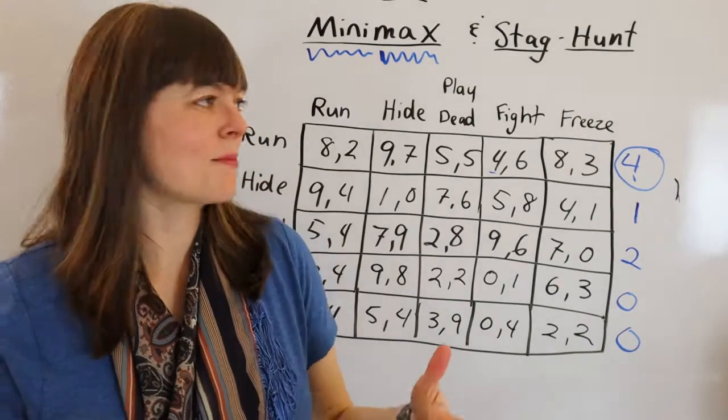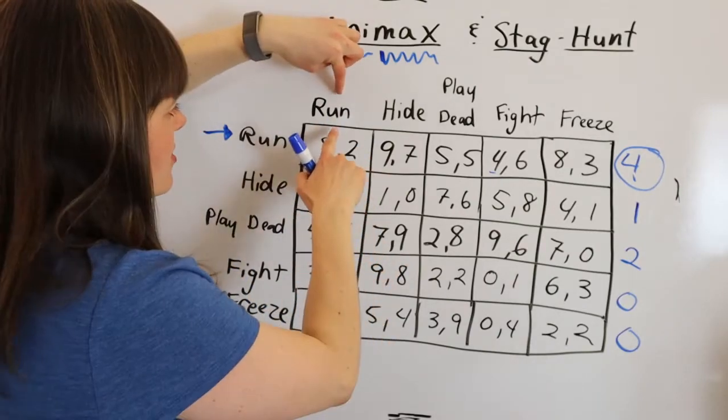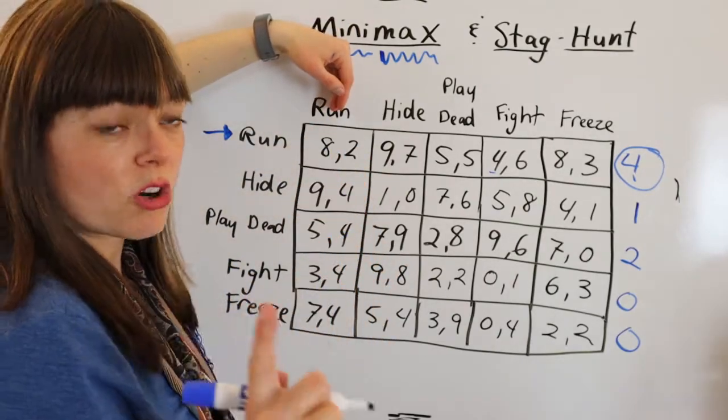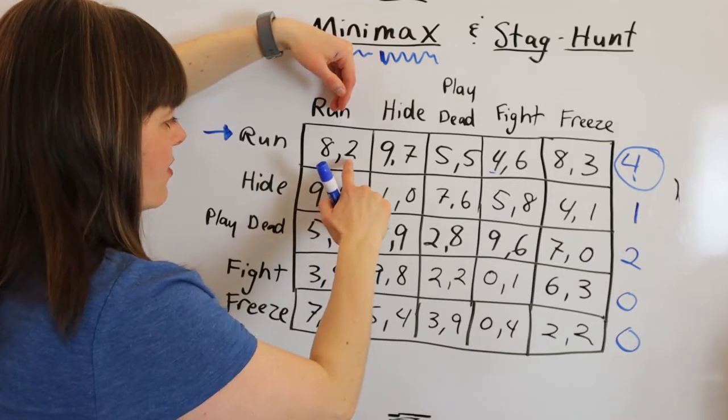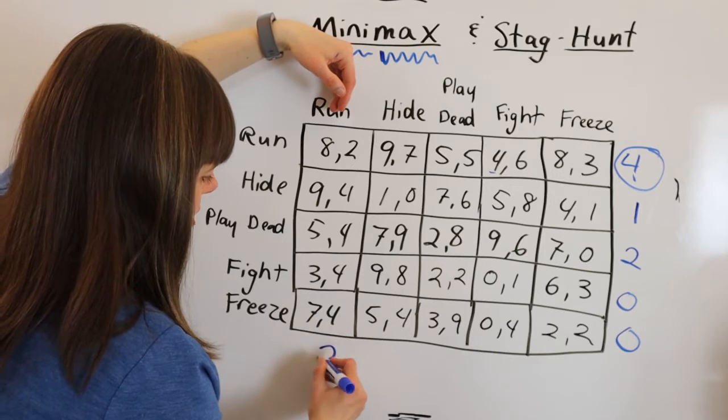And then we're going to do the same thing for player 2. So for player 2, player 2 says, if I run, what's the worst I could possibly get? And they look at all their payoffs, the player 2 payoffs, if they run, and the worst is 2.